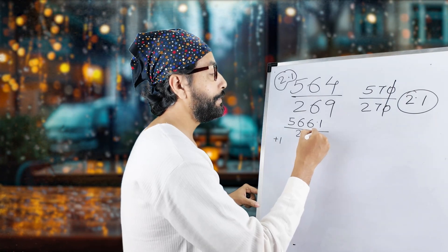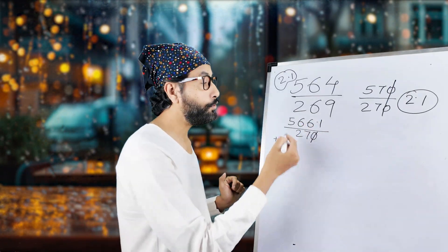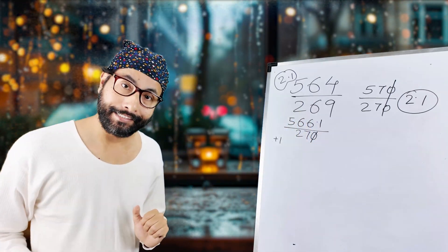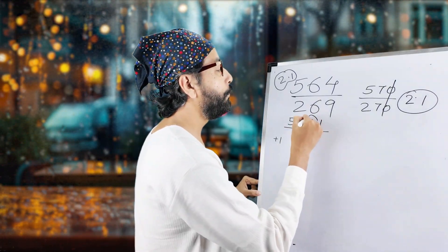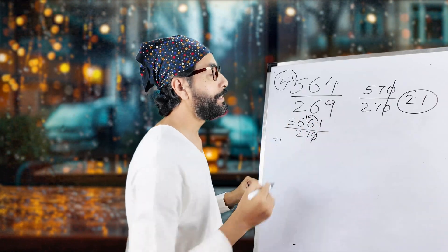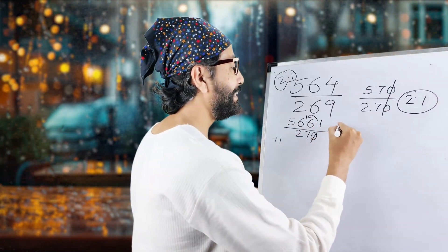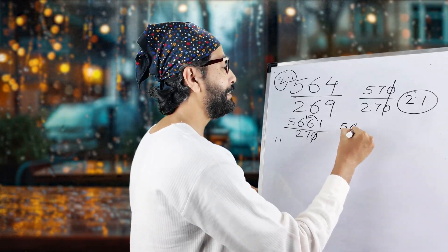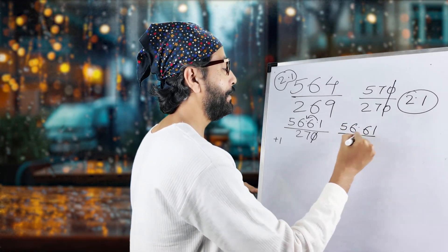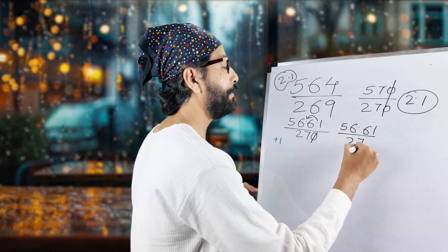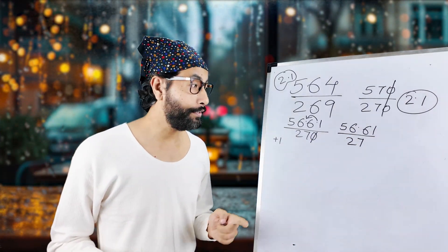Now we remove the zero by dividing both numerator and denominator by 10. The decimal point shifts, giving us 56.61 divided by 27.